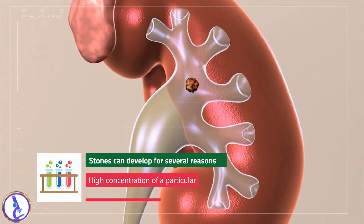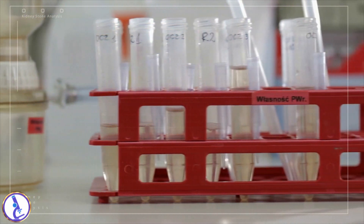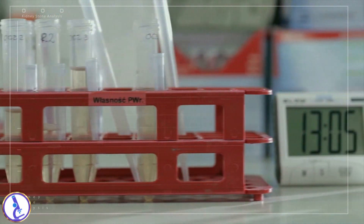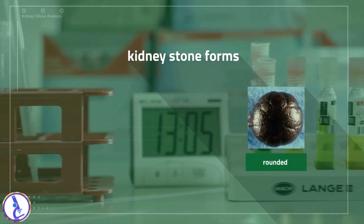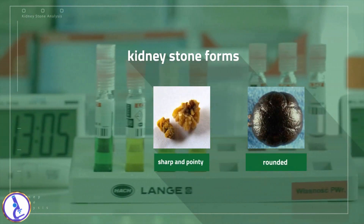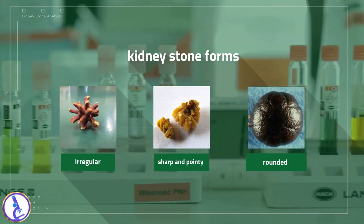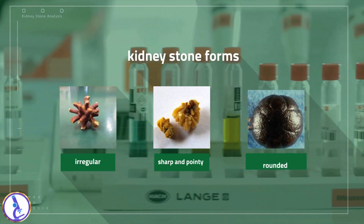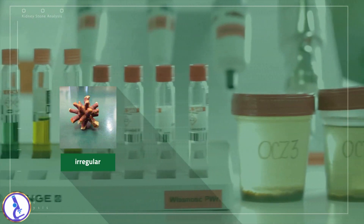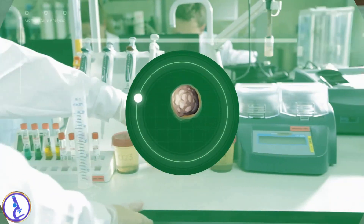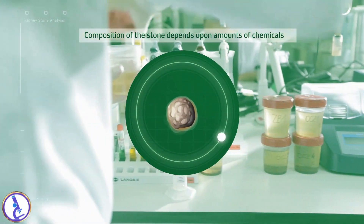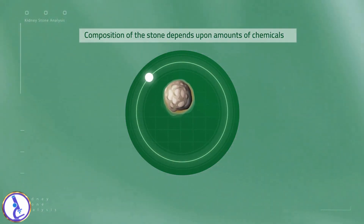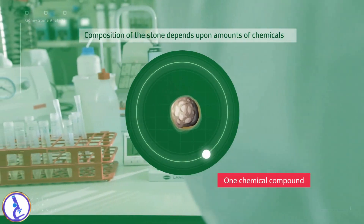Stones can develop for several reasons, but the most common is because there is a high concentration of a particular chemical in the urine that is no longer soluble and precipitates to form crystals. Depending on how much and what type of material crystallizes, a kidney stone may be round, sharp and pointy, or irregular, ranging in size from a grain of sand to bigger than a golf ball.